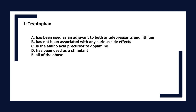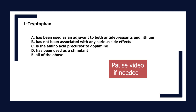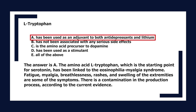Regarding L-tryptophan: A. Has been used as an adjuvant to both antidepressants and lithium. B. Has not been associated with any serious side effects. C. Is the amino acid precursor to dopamine. D. Has been used as a stimulant. E. All of the above. The answer is A. The amino acid L-tryptophan, the starting point for serotonin, has been linked to Eosinophilia-Myalgia syndrome. Symptoms include fatigue, breathlessness, rashes, and swelling of the extremities, due to contamination in the production process.